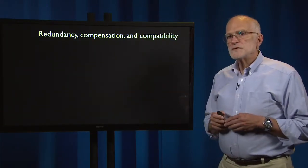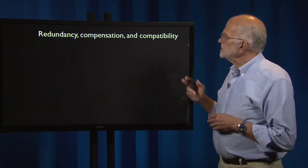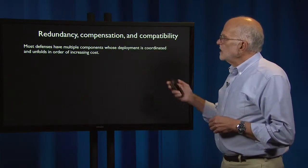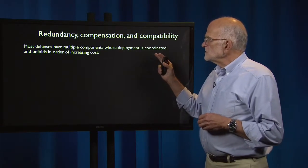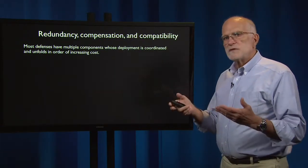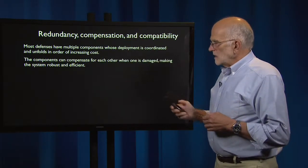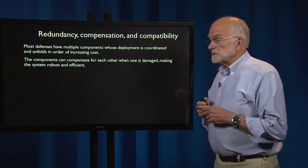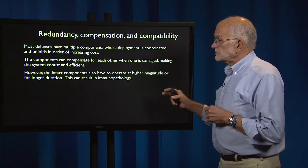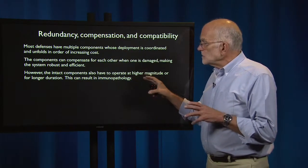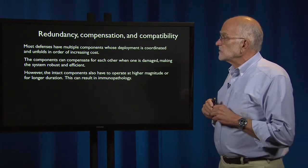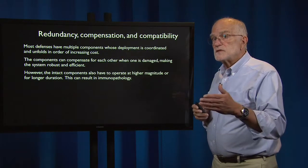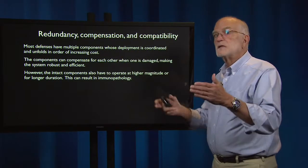Some features of these systems are redundancy, compensation, and compatibility. Most defenses have multiple components whose deployment is coordinated and unfolds in order of increasing cost. The components can compensate for each other when one is damaged, making the system robust and efficient. However, the intact components also have to operate at higher magnitude or for longer duration, and that can result in immunopathology. So if one part of the system is knocked out and another compensates, it can overcompensate.